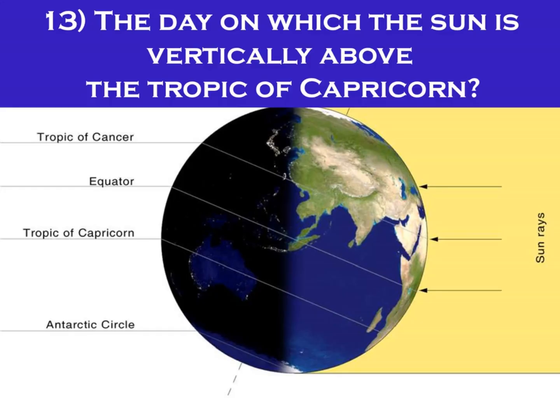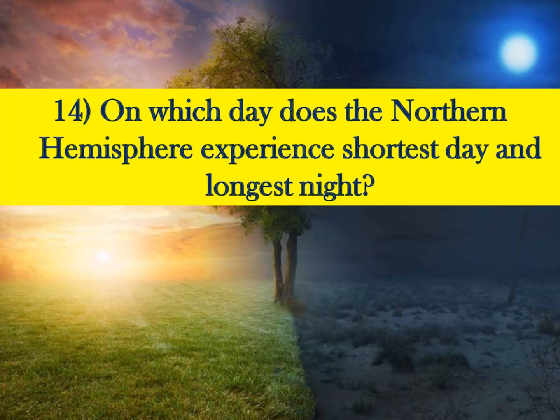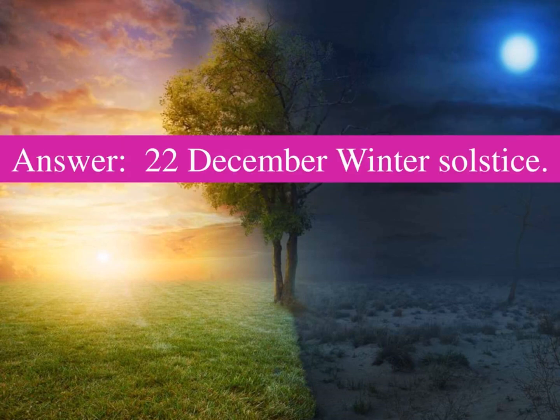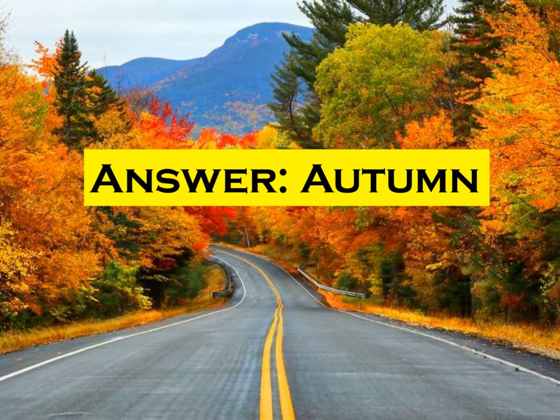The day on which the Sun is vertically above the Tropic of Capricorn is 22nd December — Winter Solstice. On which day does the Northern Hemisphere experience the shortest day and longest night? Answer: 22nd December — Winter Solstice. Which is the season in the Northern Hemisphere from 23rd September to 22nd December? Answer: Autumn season.